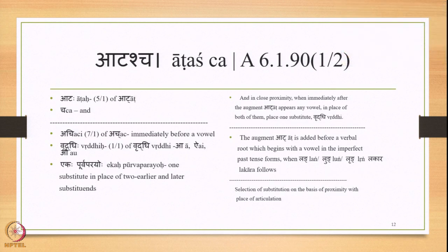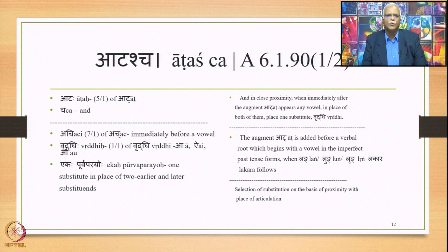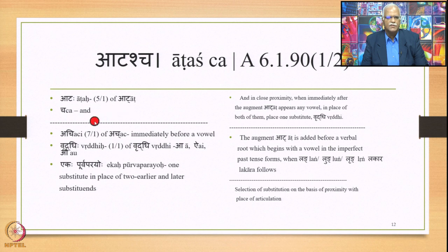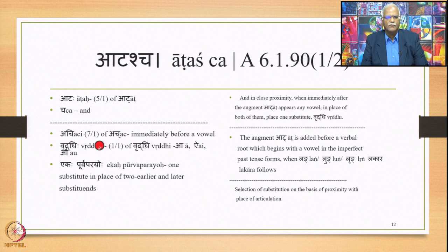Now in this lecture we shall study some other sutras related to Vriddhi Sandhi. First we shall study Atascha — this is 6.1.19. Atascha has two words: Aataha, the 5th case of Aat, where Aat is an augment, and Cha meaning 'and.' The words continued are Aachi — 7th case of Ach, immediately before a vowel — continued from Ikoyanachi; and Vriddhi, continued from 6.1.88.